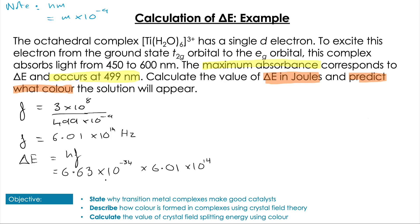So that gives us our value of frequency being 6.01 times 10 to the 14 hertz. Once we have our hertz, we can calculate delta E directly using Planck's constant multiplied by the value we just calculated. So we found our value for delta E, which equals 3.99 times 10 to the minus 19 joules.